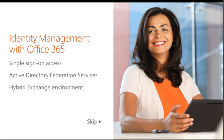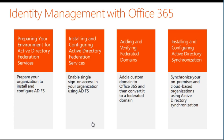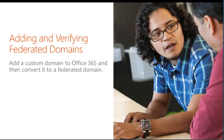With Office 365, you can provide your users with single sign-on access to Microsoft Exchange Online, Link Online, SharePoint Online, and Office 365 Pro Plus activation. This guide is the third in the series, Identity Management with Office 365. These four guides were designed to be taken in order, as they follow the prescribed process for configuring Active Directory Federation. In this guide, you'll see how to add a custom domain to Office 365, and then convert it to a federated domain.